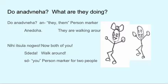Nihiidula nowu — Now both of you. Steda — You two walk around. Steda is the you person marker for two people; you're talking to just two people. Steda — You two walk around.